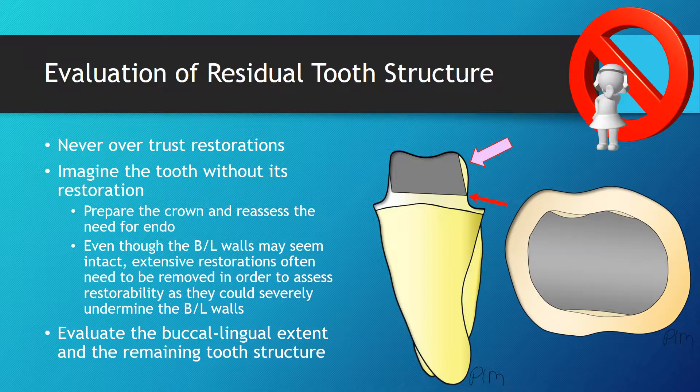In a situation such as this one, evaluating the thickness of the residual tooth structure may be easier by removing the direct restoration before preparing the tooth for a crown.